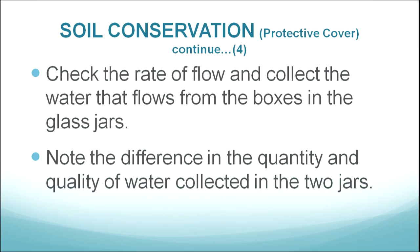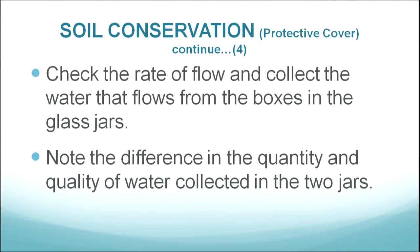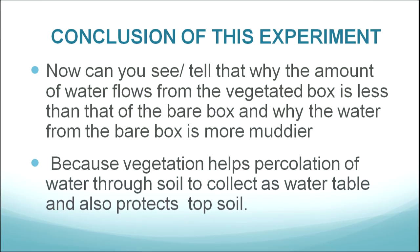Check the rate of flow and collect the water from both boxes in glass jars — mathematics is involved here too. Note the difference in quantity and quality of water collected. Ask children why the amount of water from the vegetated box is less and why the water from the bare box is muddier. Children will tell you: because vegetation helps percolation of water through soil, collects as water table, and protects topsoil. A simple experiment makes learning so easy. EVS connects with language, maths, and arts and crafts.